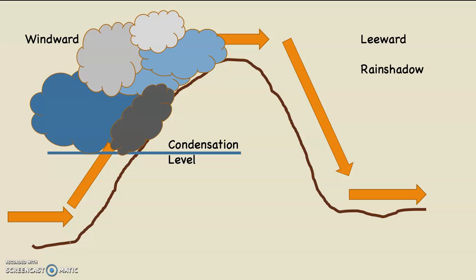That blue line is what's called the condensation level — the elevation at which a rising parcel of air first cools to its dew point temperature. As the air is rising, it's cooling and the relative humidity is going up. The condensation level represents the elevation at which that rising parcel of air first reaches 100% relative humidity; the air is saturated, air temperature and dew point temperature are the same number. From that point on, as the air rises, a cloud is going to form.